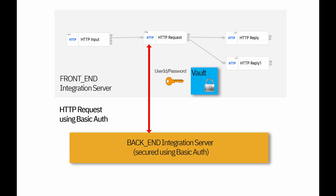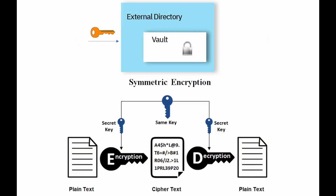In the previous video, I showed how a message flow could use HTTP credentials from a vault to issue HTTP requests using basic auth. I will extend the scenario so that the credentials can be stored in an external directory vault so that separate integration servers can access the same credentials from the external vault. Prior to ACE version 12.0.9, an encrypted credential vault could be used at the integration node level or the integration server level. New in ACE version 12.0.9, an external directory vault can be used. The external directory vault uses the same symmetric encryption to encrypt and decrypt data records stored in the vault.